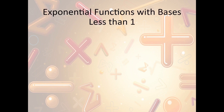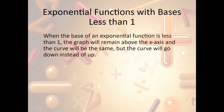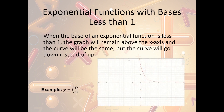Now let's take a look at exponential functions with bases less than 1. When the base of an exponential function is less than 1, the curve will remain above the x-axis but will go down instead of up. For example, y = (⅓)ˣ · 4 — notice the base ⅓ is smaller than 1. A normal curve goes up, but with a base less than 1, it's going to go downward as we go from left to right. It looks exactly the same as 3ˣ, except it's mirrored over going the other direction.